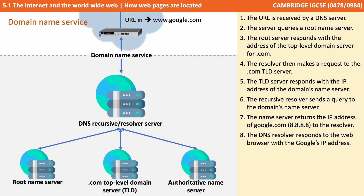The recursive resolver then sends a query to the domain's name server. The name server returns the IP address of google.com to the resolver, and the DNS resolver responds to the web browser with Google's IP address. The takeaway is that the domain name service is actually a series of separate domain name servers, but the ultimate purpose is always the same: to return an IP address for a specific server hosting a web page, from a human-friendly URL that you've provided.